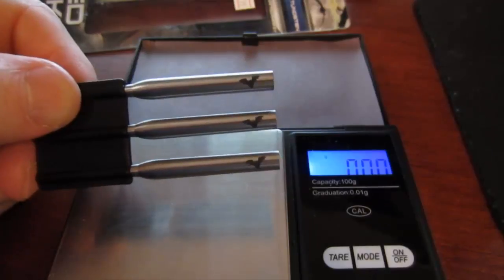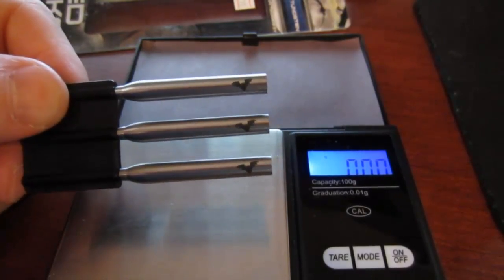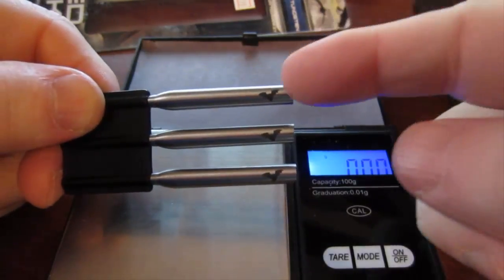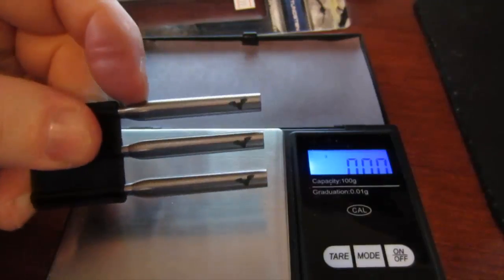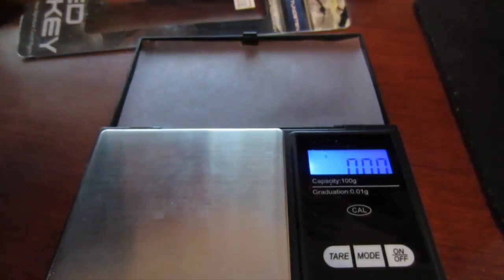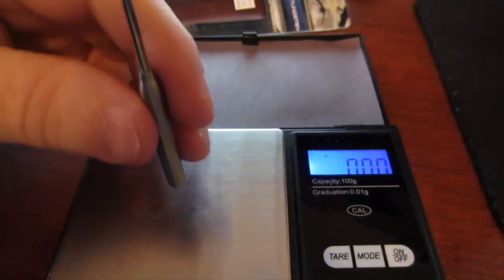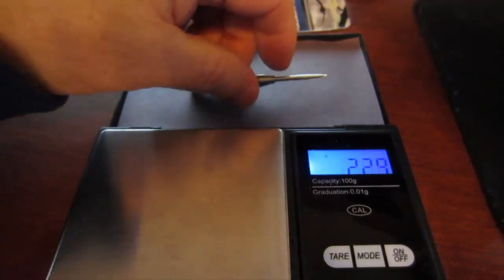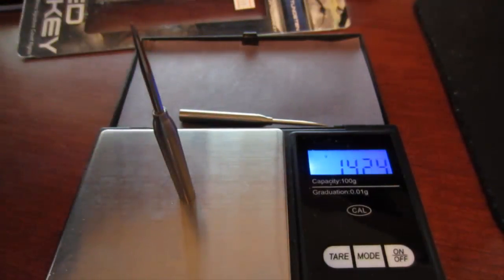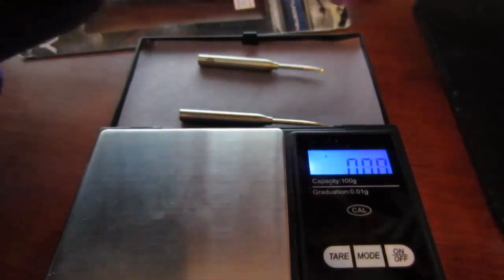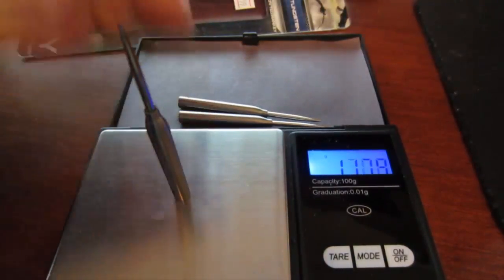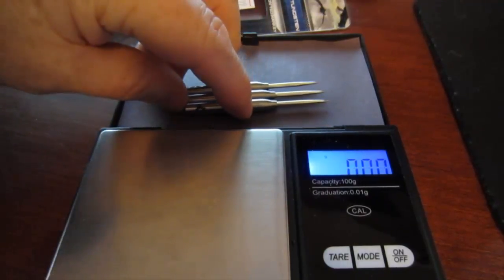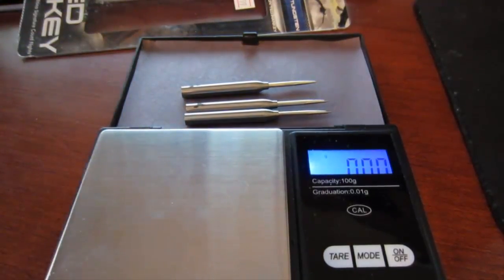For those that don't know, the Ted Hanky dart, the 14 gram Ted Hanky dart, is almost all the way hollow. These things are 43 millimeters long, and they're actually drilled out in the back to about 35 millimeters, 34.8 to be exact. Let's get these on the scale: 14.22, 14.25, and the final one 14.21.